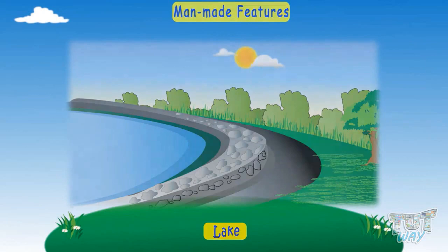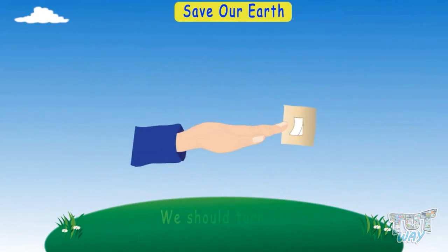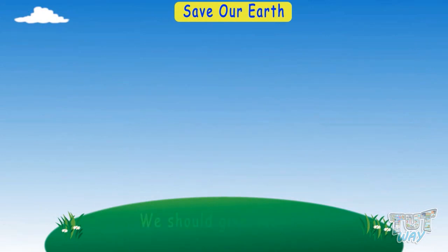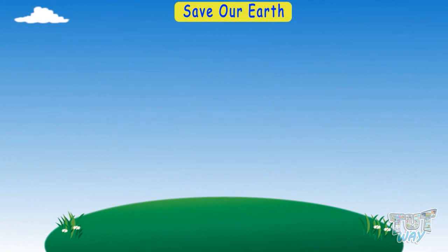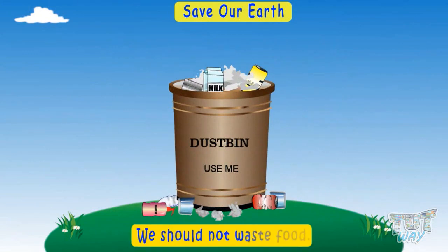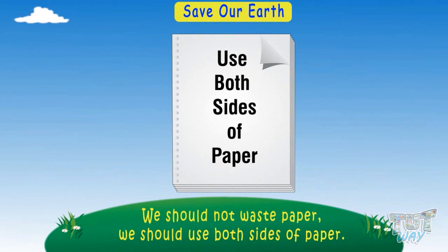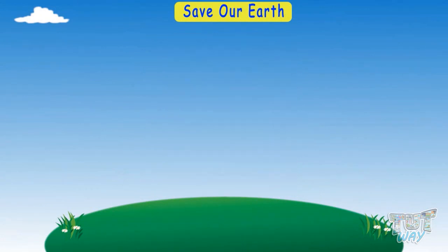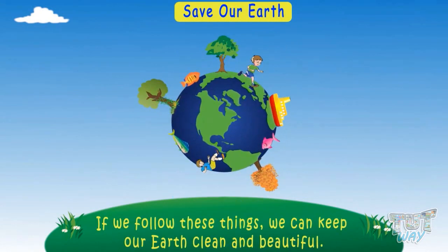Kids, we should help keep our planet clean and green. We should turn off lights when not in use, give away waste for recycling or reuse, take care of animals, and plant more trees. We should not waste food, paper, or water. We should use both sides of paper. If we follow these things, we can keep our planet clean and beautiful.